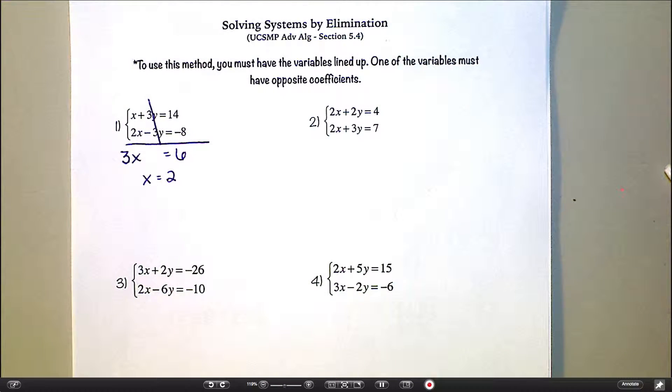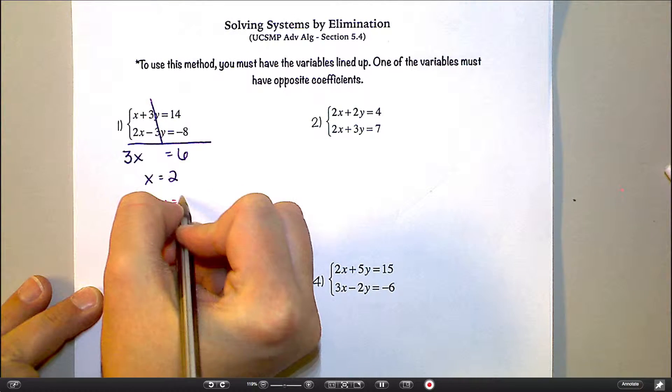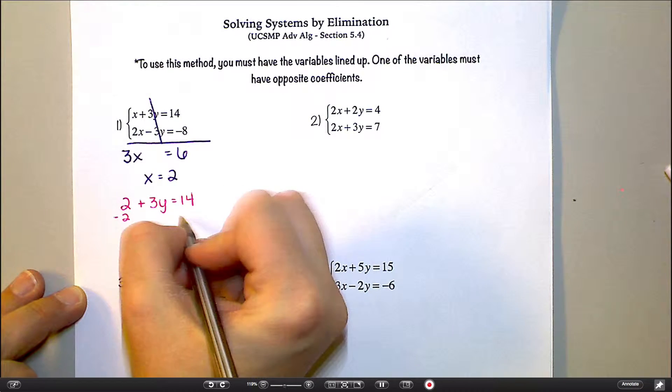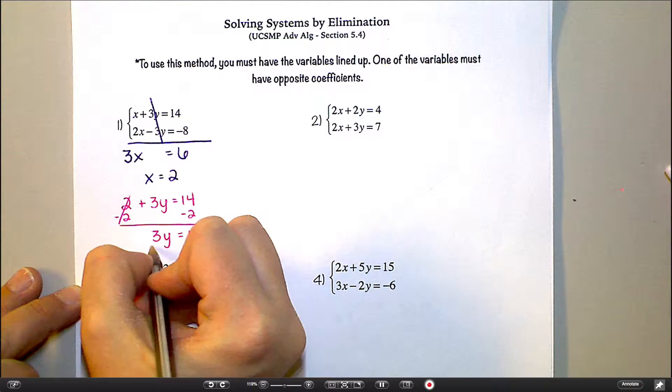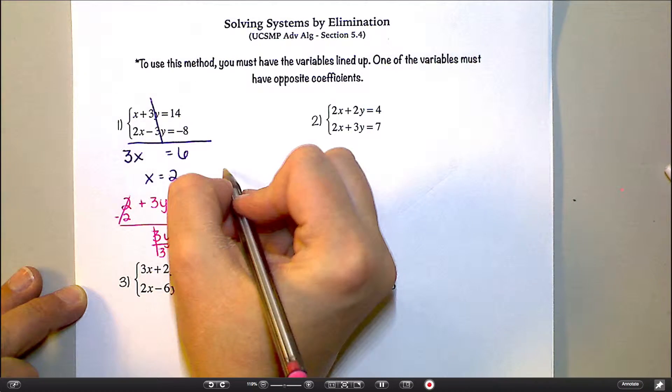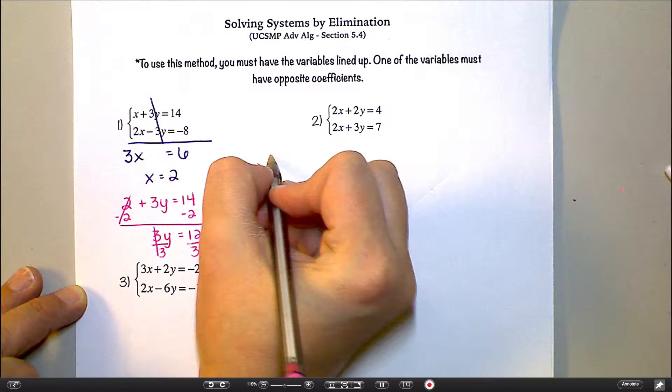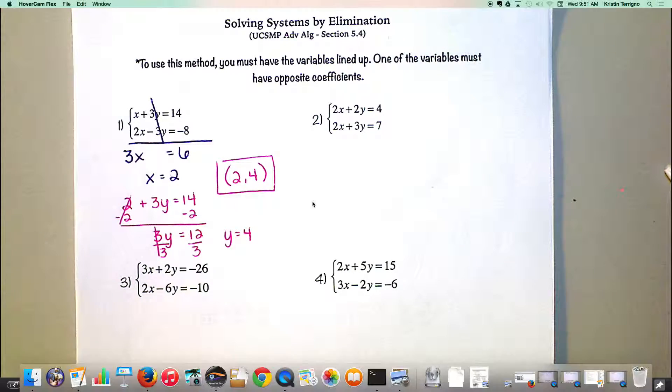And so then I still need to go back and find y. Now this is a little more complicated to find y. I mean, it's not terrible, but I don't have an equation that says y equals blah, blah, blah. But I can plug it into either equation that I want. Which one do you feel like? The first one? Okay. So if I plug that back in up top, it would say 2 plus 3y equals 14. Subtract 2 and subtract 2. So I get 3y equals 12. Divide by 3. Divide by 3. Y equals 4. And so final coordinate, 2, 4. Does that make sense? Follow that? Okay. I'll check and make sure. Good.